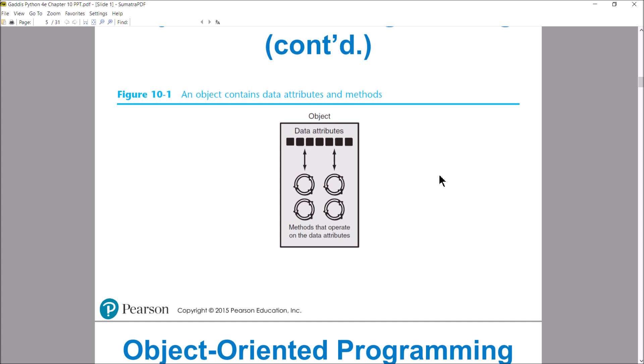For example, you might be making a role-playing game, an MMO. Within your MMO, you have player characters, non-player characters, armor, swords, and monsters. Each one of those things gets represented by an object. So figure 10-1 here is kind of a representation of what we're talking about. Objects have these data attributes — variables that belong to the object — and that data is manipulated by the methods that are encapsulated in that object.